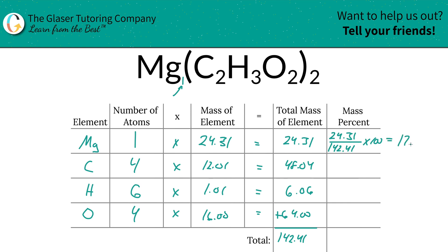Then you can solve it. 17.07. That's the percent of magnesium in magnesium acetate.